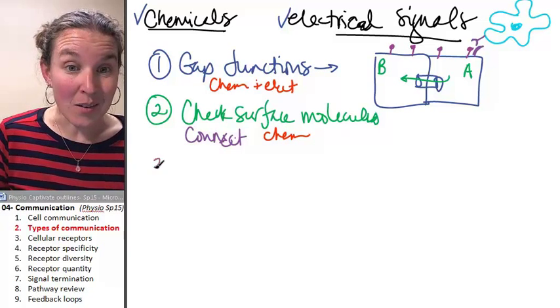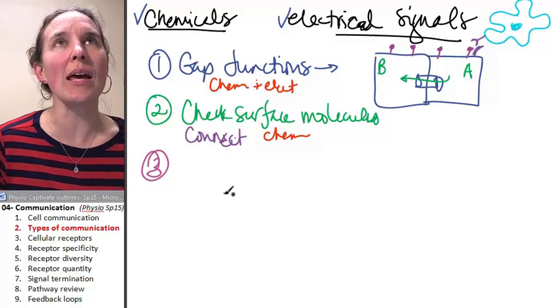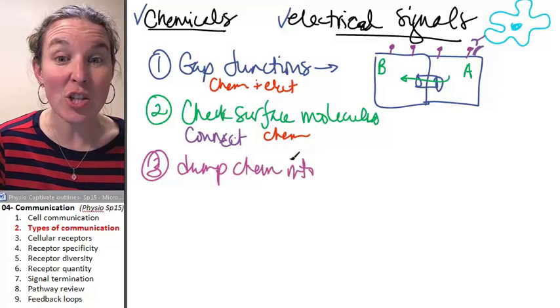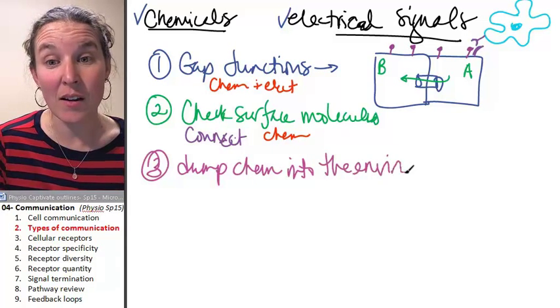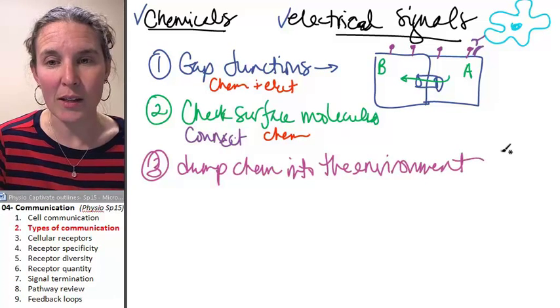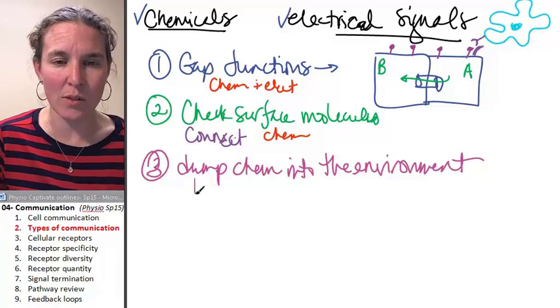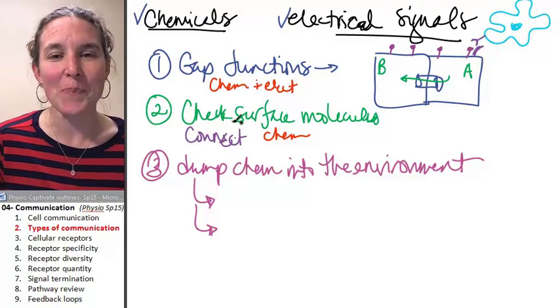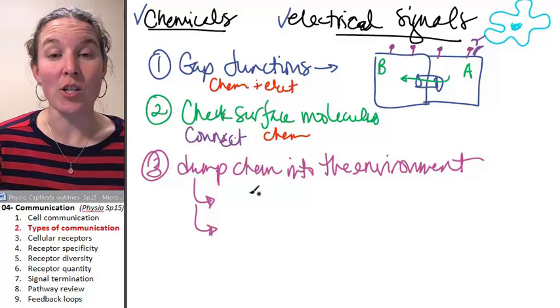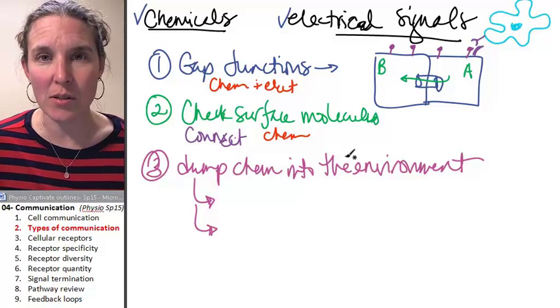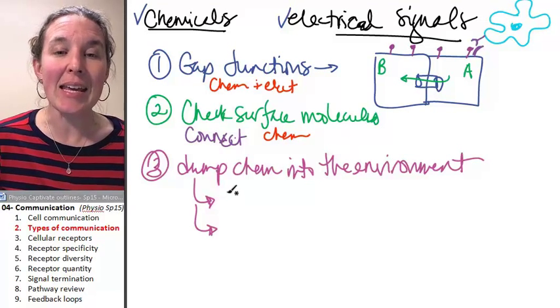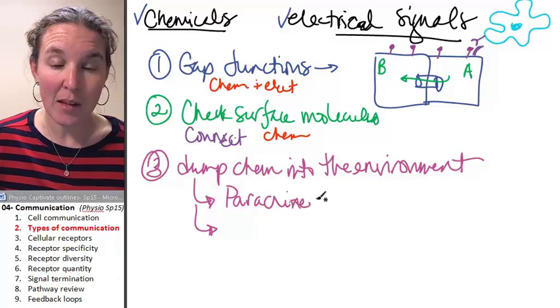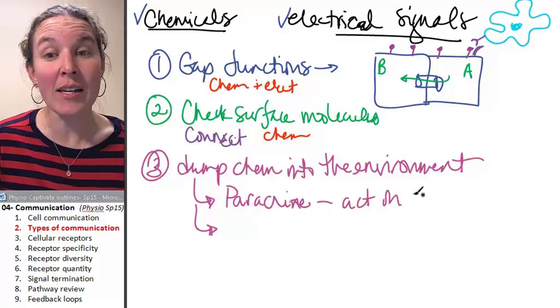You can dump chemicals into the environment. That's not, like, that makes total sense, but it's a little more novel than you might think. There's a couple ways that can allow for communication. One cell can dump chemicals into the environment and those chemicals are paracrine signals if they act on the neighbors.